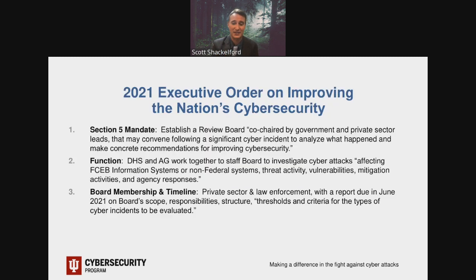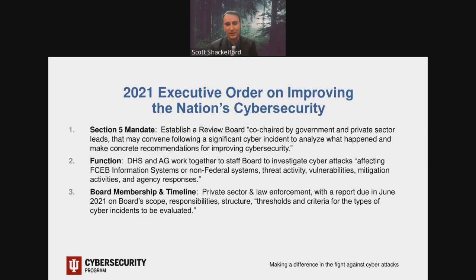That all sets the stage for the executive order seen this past spring regarding cybersecurity. The main relevant piece for these purposes is Section 5, which sets up this review board. It puts DHS and the U.S. Attorney General's office in the driver's seat for figuring out the composition of that board, with a variety of different stakeholders from the public and private sector involved — with different competencies, as seen in the NTSB board — ensuring these aren't just run-of-the-mill political appointees. The idea was to have stood this up already, though there have been some delays. Key media issues already being discussed include scope, responsibilities, and the timeline for reports, since NTSB reports can take a year or more to compile.